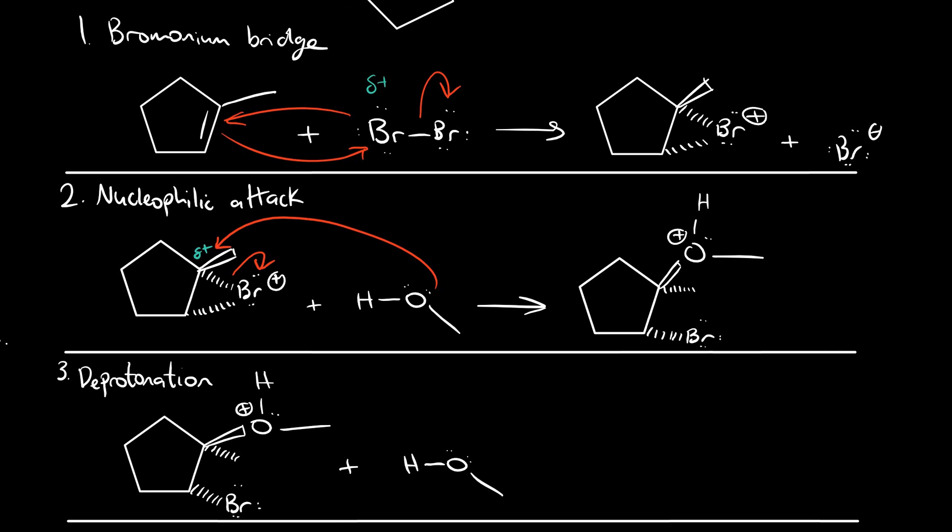Methanol acts as a weak base, attacks the proton, the electrons between the proton and oxygen flow back to the oxygen atom, and we form our product, which is the bromohydrin.